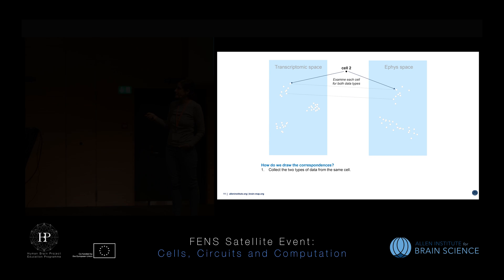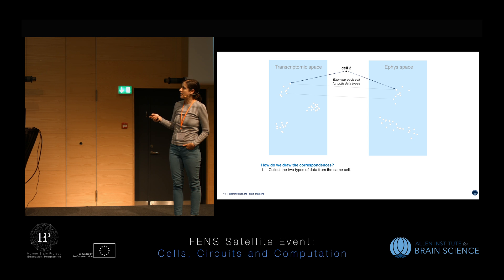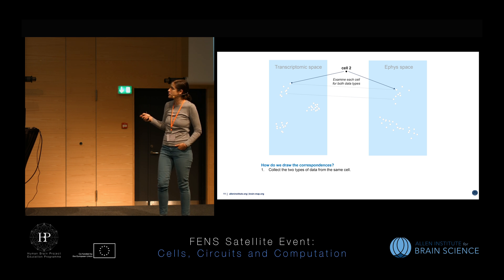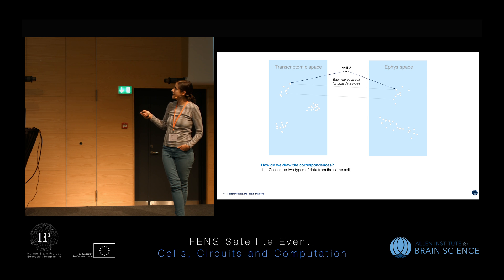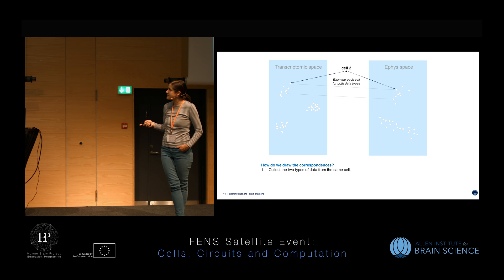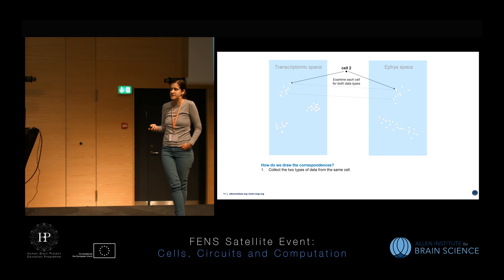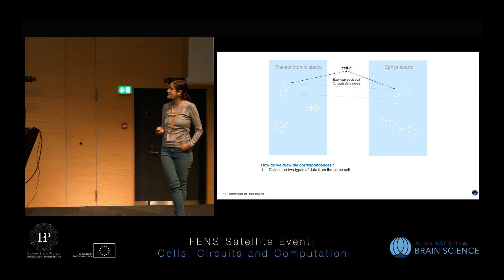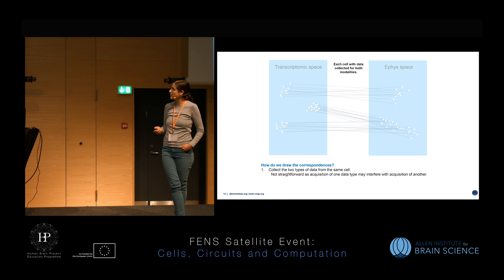If we acquire only a single data type, we can determine where cells are in a transcriptomically defined multidimensional space, but we don't know how those clusters relate to cells clustered based on electrophysiological characteristics. We would really like to establish that correspondence — that's where integrated neural phenotyping comes in. The most obvious approach is to collect two types of data from the same cell, and by doing this a sufficient number of times with sufficient sampling, derive these correspondences.